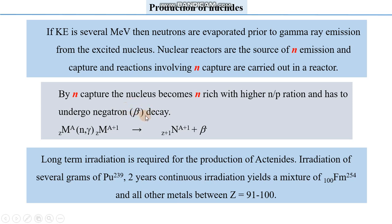What change does beta decay carry out in the nuclei? For example, consider a metal with atomic number Z and atomic mass A. A neutron is captured by the nucleus with emission of gamma radiation, producing a new nucleus M(A+1, Z). This daughter nucleus has an elevated neutron-to-proton ratio because the number of neutrons increased compared to its parent nucleus.